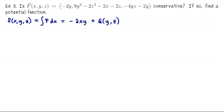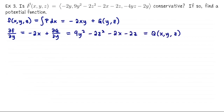This is our anti-derivative; we just don't know what capital G is yet. To start piecing together what capital G must be, let's take this potential function and differentiate it with respect to y — that steps us from the first coordinate function to the second one. Based on the line above, df/dy must have the form −2x plus dG/dy. Let's compare this to what we know df/dy should be — the second component function: 9y² − 2z² − 2x − 2z. The negative 2x's cancel, so we conclude that G's y partial derivative is 9y² − 2z² − 2z.